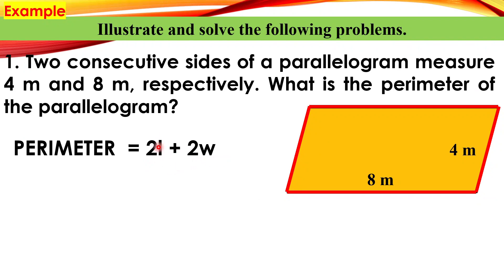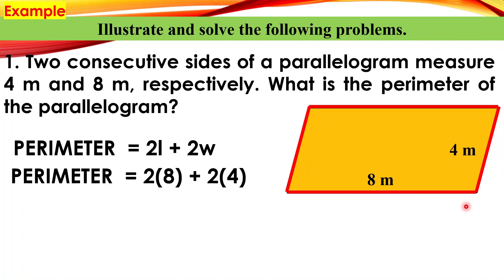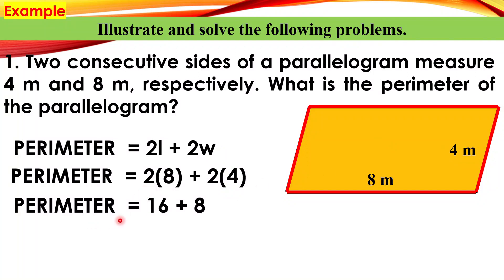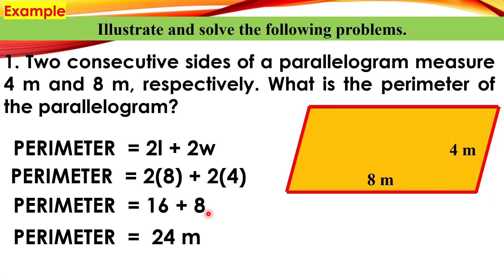Here L represents length and W represents width. Perimeter is equal to 2 times 8 (the length) plus 2 times 4 (the width). So perimeter equals 16 plus 8, which equals 24.